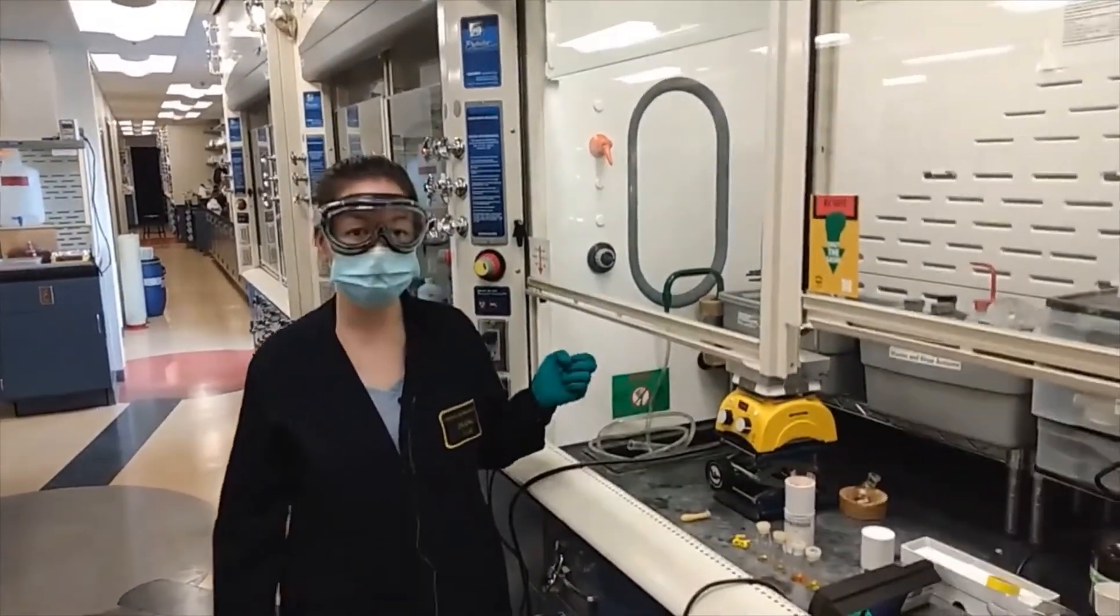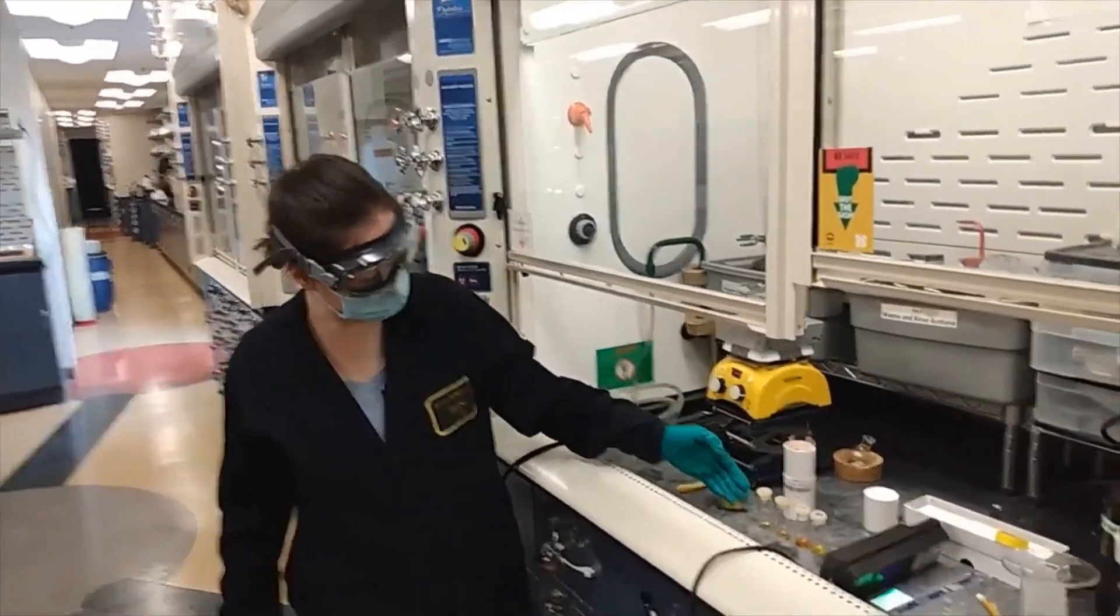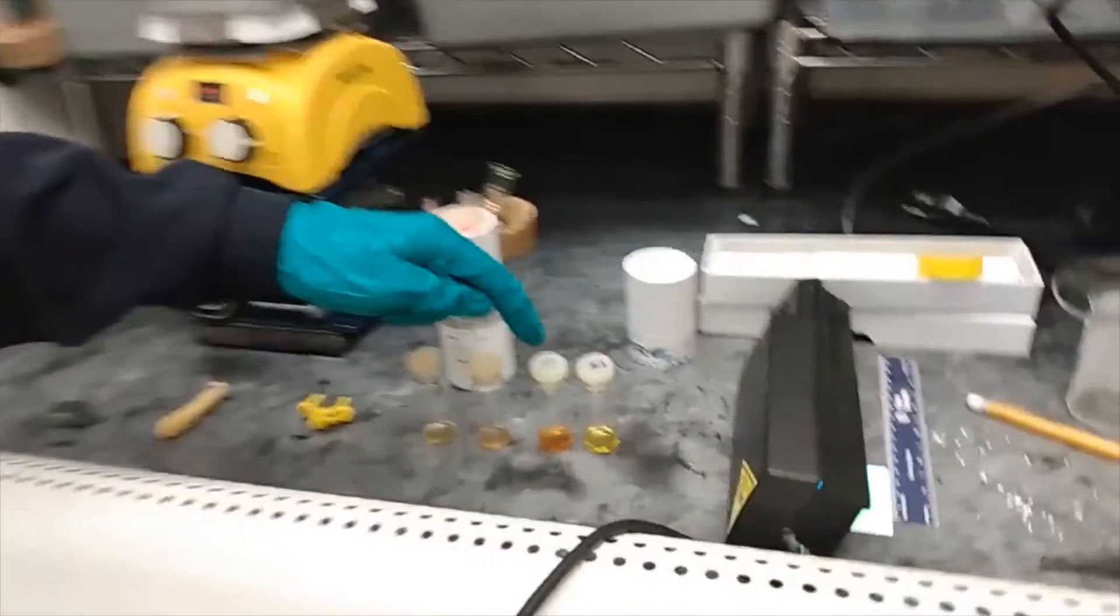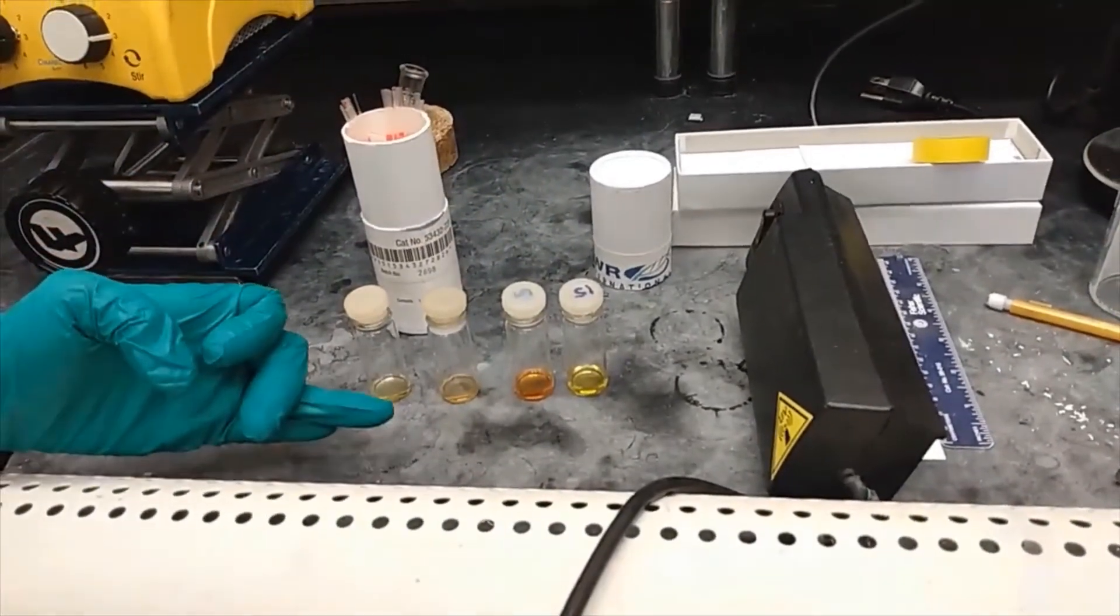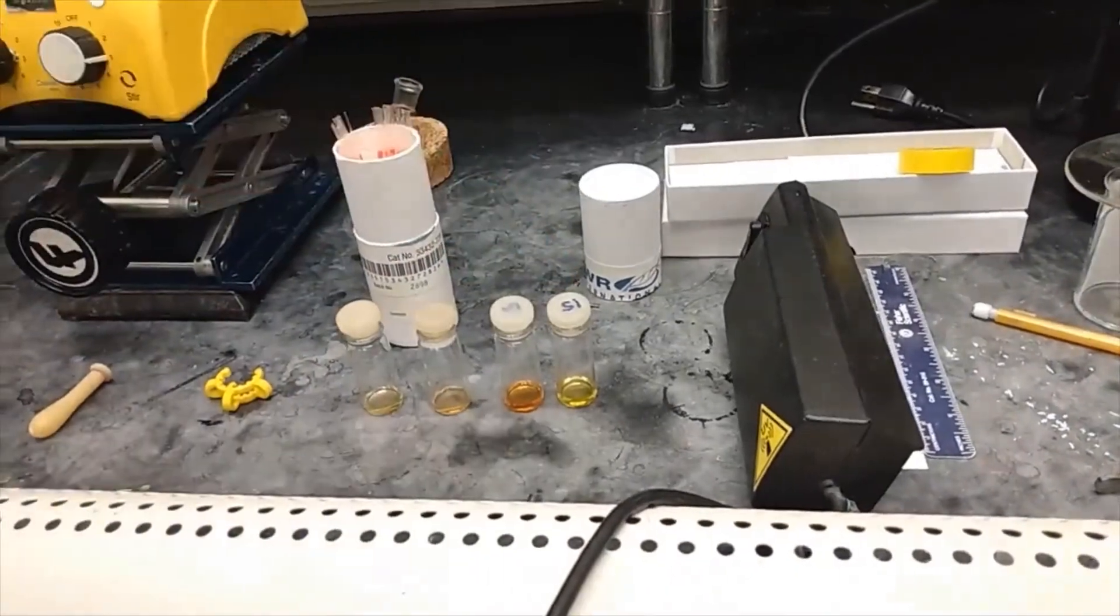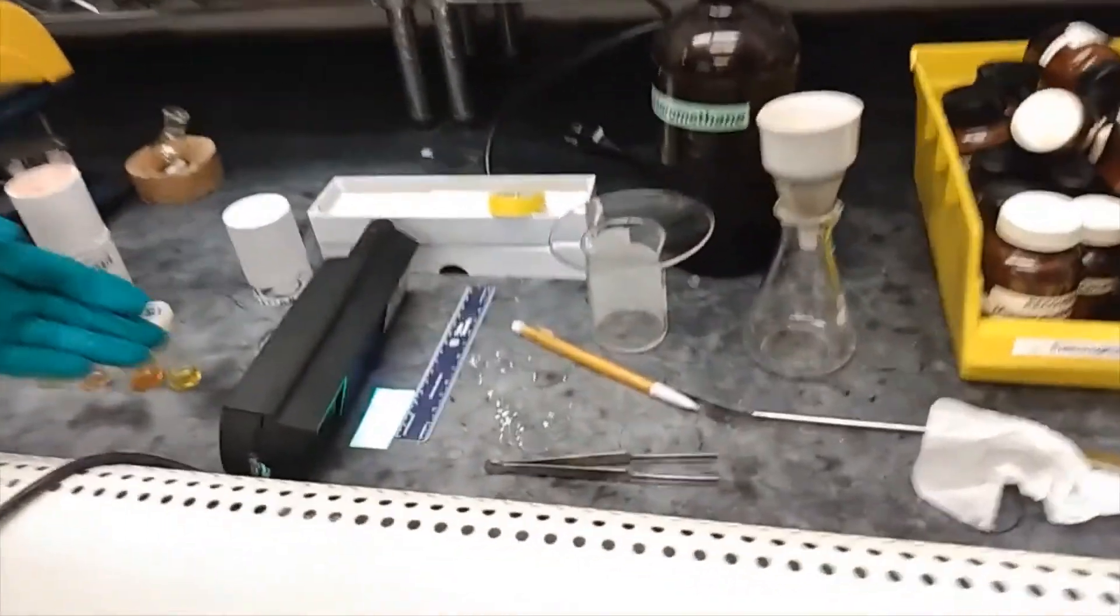So for our TLC spotters, these are them. This is the 5, 10, 15 minute aliquots, and then just ferrocene. You can notice how it gets progressively more orange compared to ferrocene being quite yellow. And then when you look at the TLC...